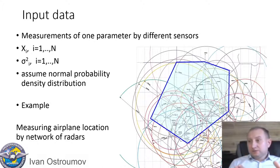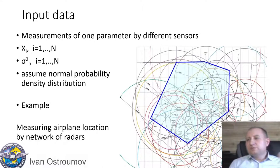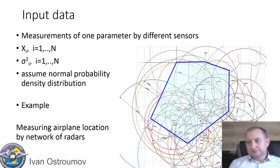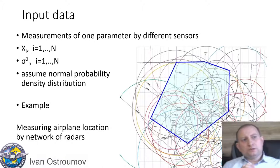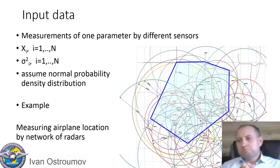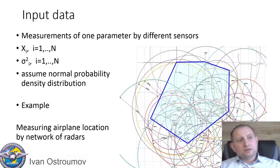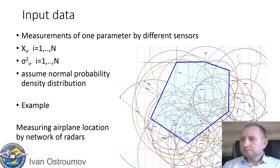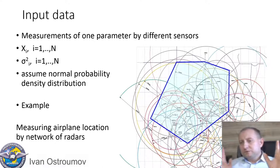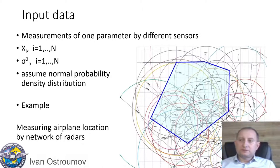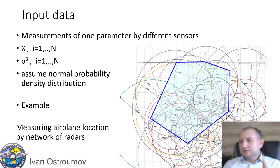So the measured value or mean value is x — our parameter — and standard deviation or dispersion is the shape parameter of the normal probability density function. One common case where we apply this task is surveillance data processing. There are different sensors for airplane coordinate detection on the ground, and one of the basic ones is radar — in civil aviation it is the secondary surveillance radar.